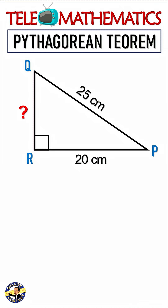We have a right triangle whose side lengths are 25 cm in segment PQ, 20 cm in segment PR, and we must calculate the length of the missing side, which is segment QR.